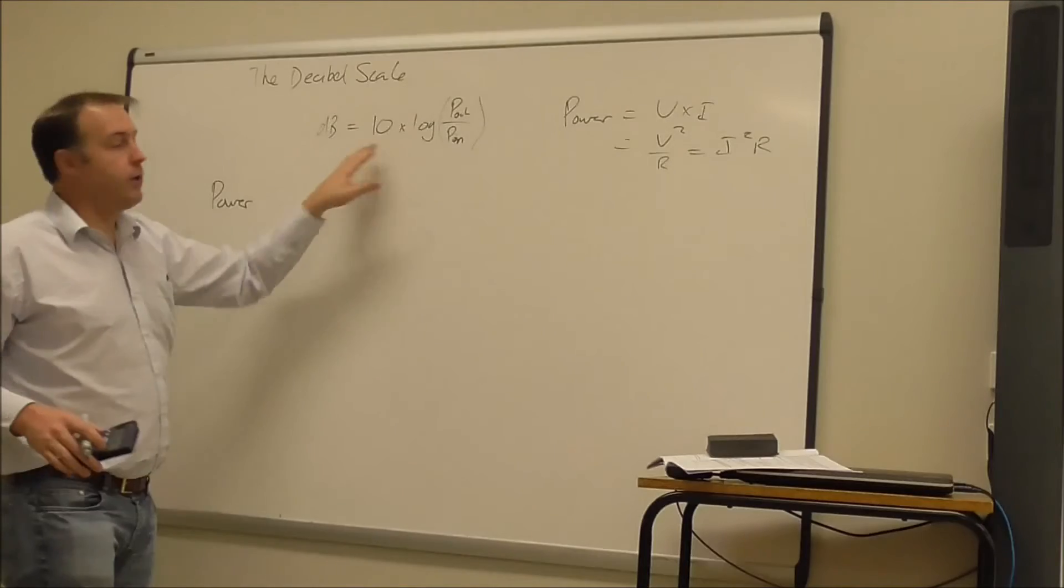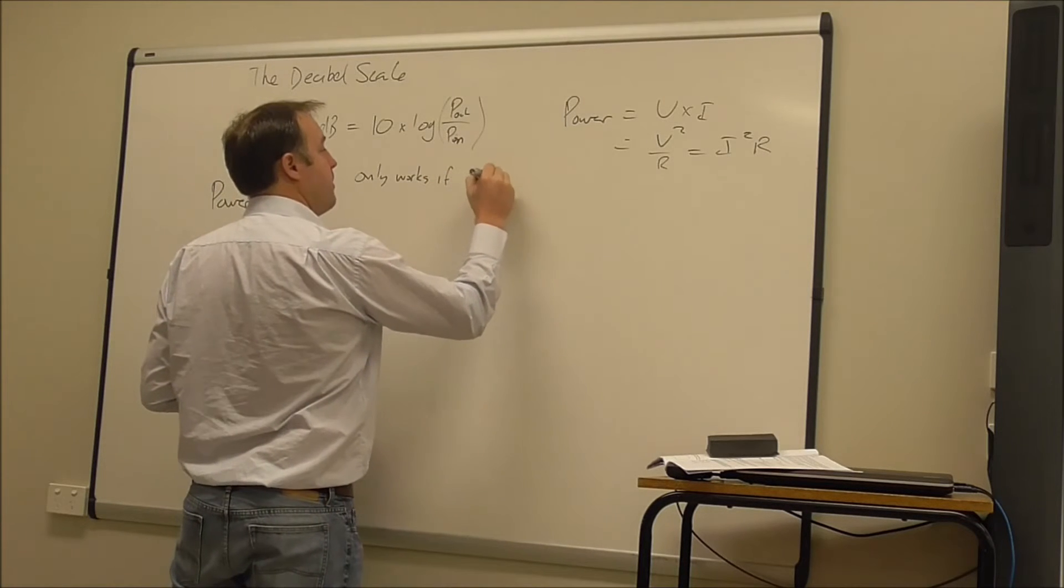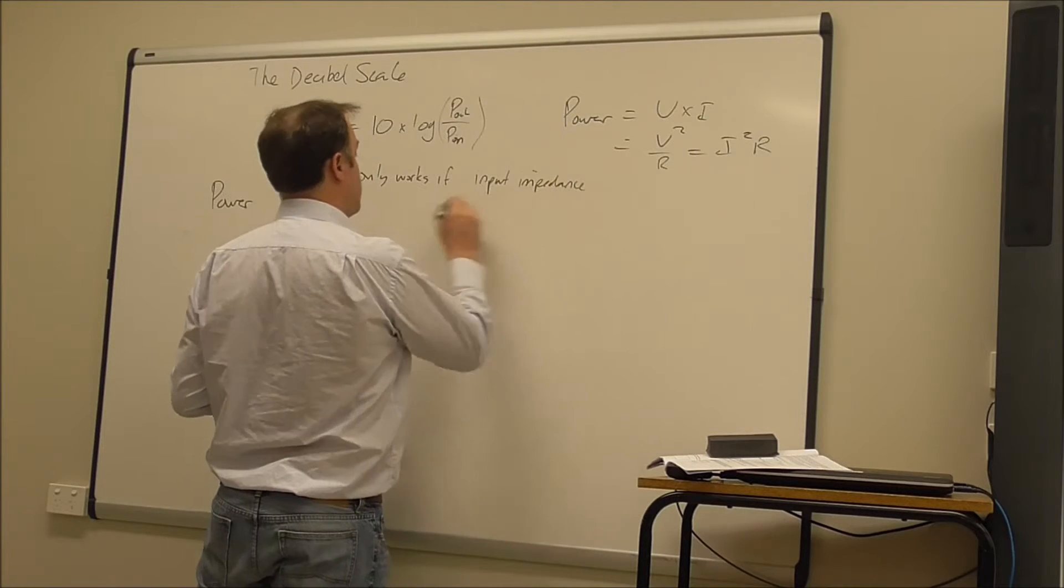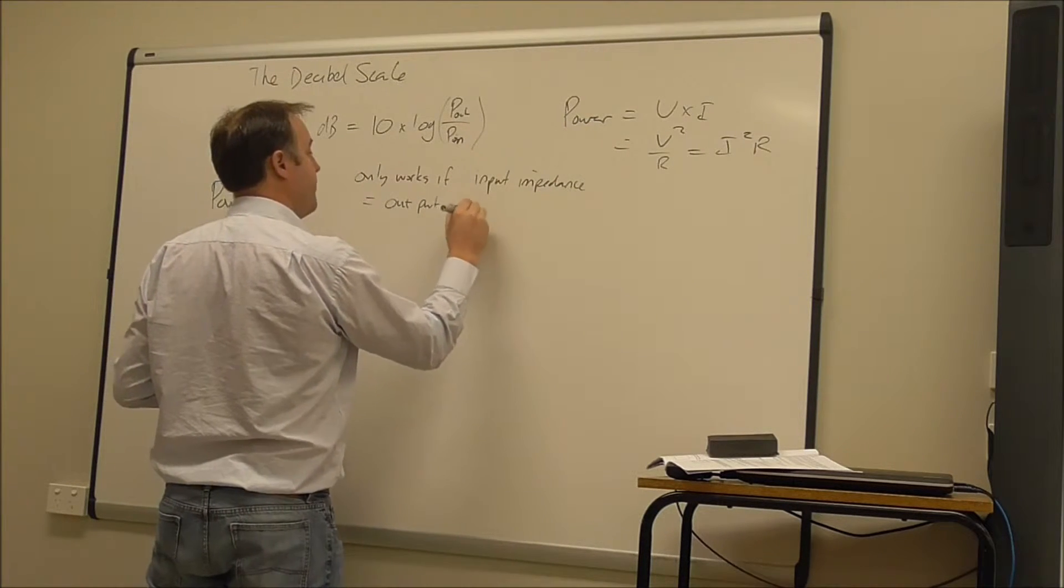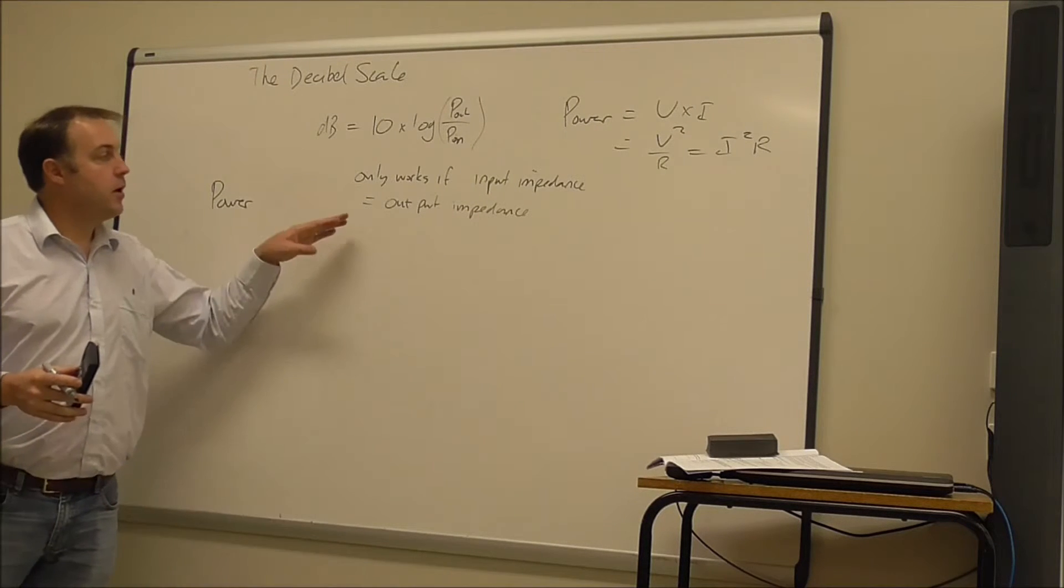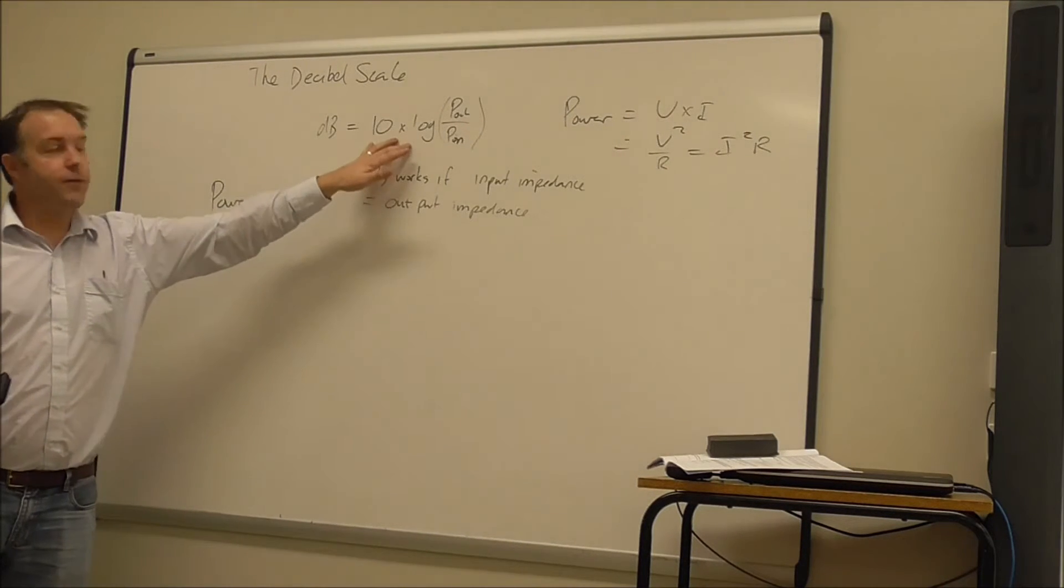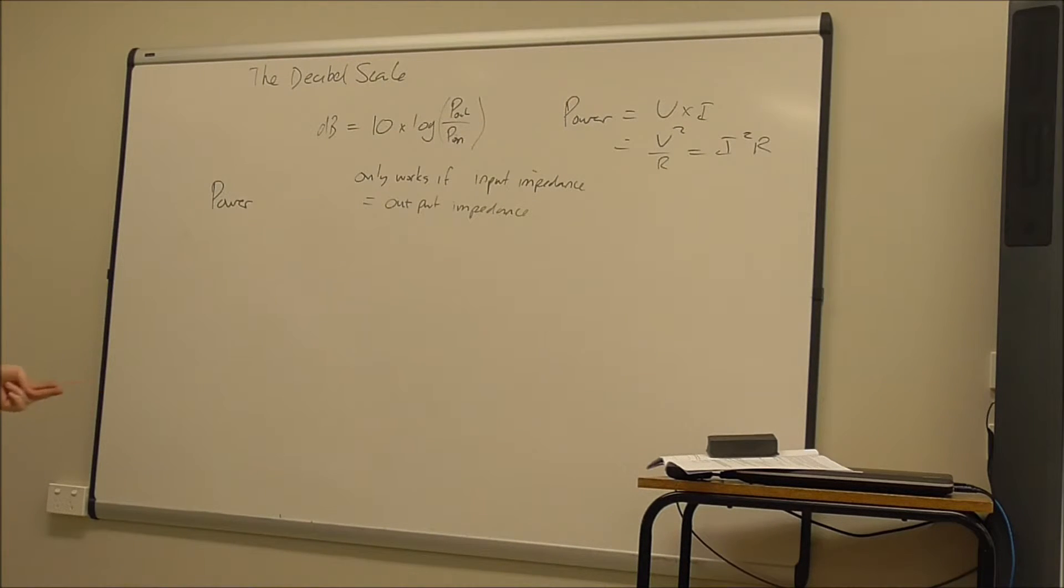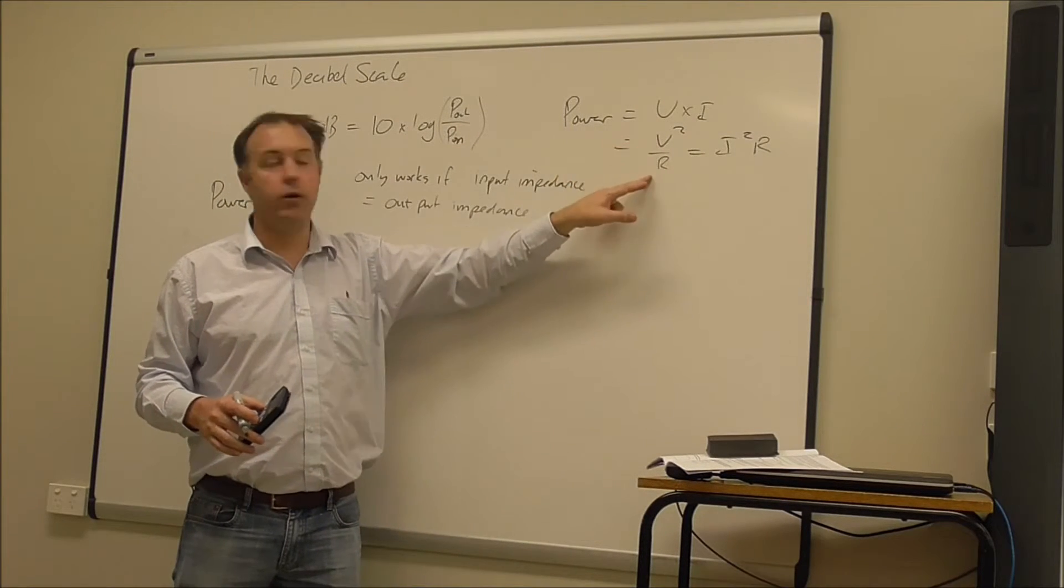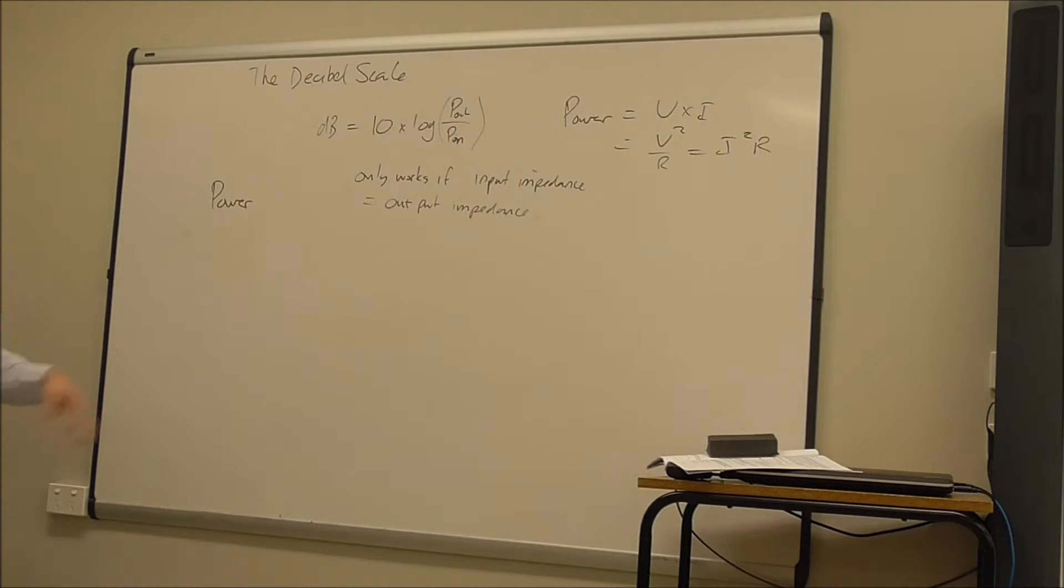And this only really works if input impedance is equal to the output impedance. So we were talking about the input impedance of an amplifier before in the previous unit. If the input and the output impedance are matched then we can use this formula. If they're not matched what we can do is we can calculate the voltage for the given input power for each one and use the voltage gain formula. So you can calculate the voltage given this V squared on R.